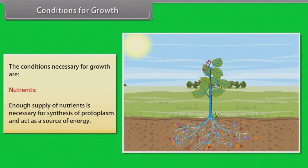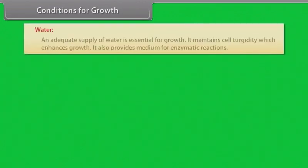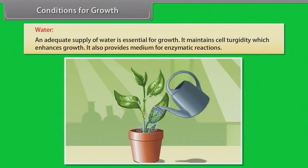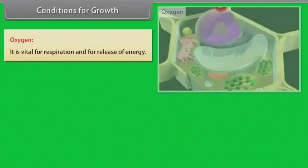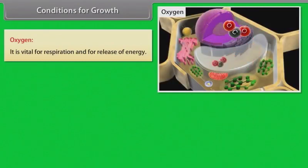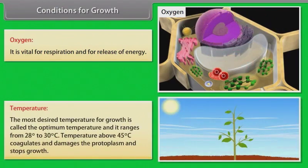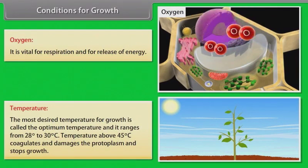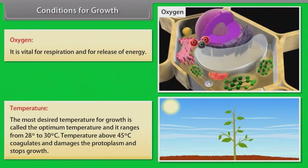Conditions for growth: Nutrients — enough supply of nutrients is necessary for synthesis of protoplasm and as a source of energy. Water — an adequate supply of water is essential for growth; it maintains cell turgidity which enhances growth, and provides medium for enzymatic reactions. Oxygen — it is vital for respiration and for release of energy. Temperature — the optimum temperature for growth ranges from 28°C to 30°C. Temperature above 45°C coagulates and damages the protoplasm and stops growth.